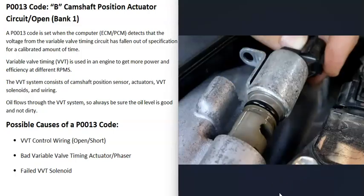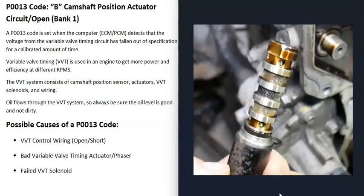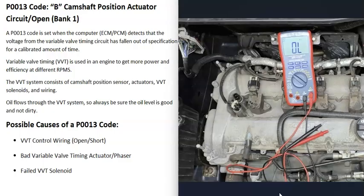The next possible cause is the variable valve timing solenoid going to that actuator. If there's an issue with that solenoid, it won't send the right oil pressure to the actuator. If you have a multimeter, you can check the coil and circuitry inside the solenoid by looking up the rated ohms for the solenoid on your vehicle. For example, if it's rated at nine ohms but reads 15-16 ohms, or reads open with no reading at all on bank one camshaft B, then that solenoid is bad and needs to be replaced.